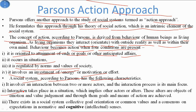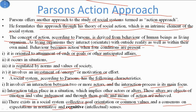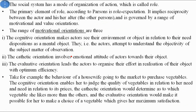According to Parsons, the social system has the following characteristics. First, it involves interaction between two or more actors, and the interaction process is its main focus. Second, interaction takes place in a situation where other actors, called alters, are objects of emotions and value judgments, and through them goals and means of actions are achieved. Third, there exists in a social system collective goals orientation or common values and consensus on expectations in both normative and cognitive senses.